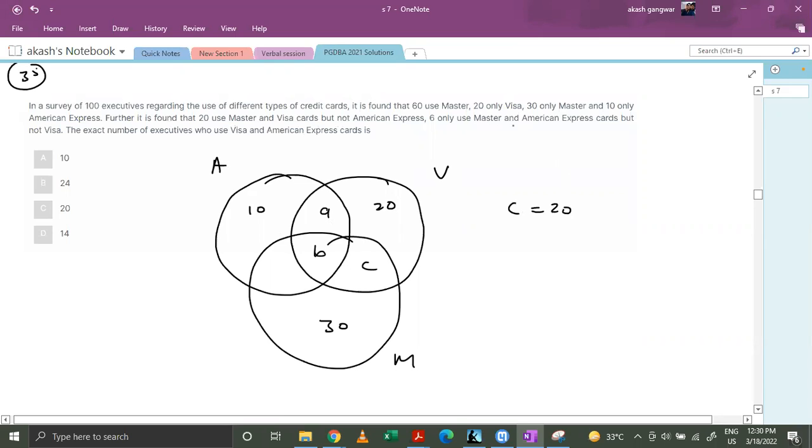Six only use Mastercard and American Express cards. So basically, let's say this is d. b plus d, but not Visa, but not b. So basically d equals to 6.